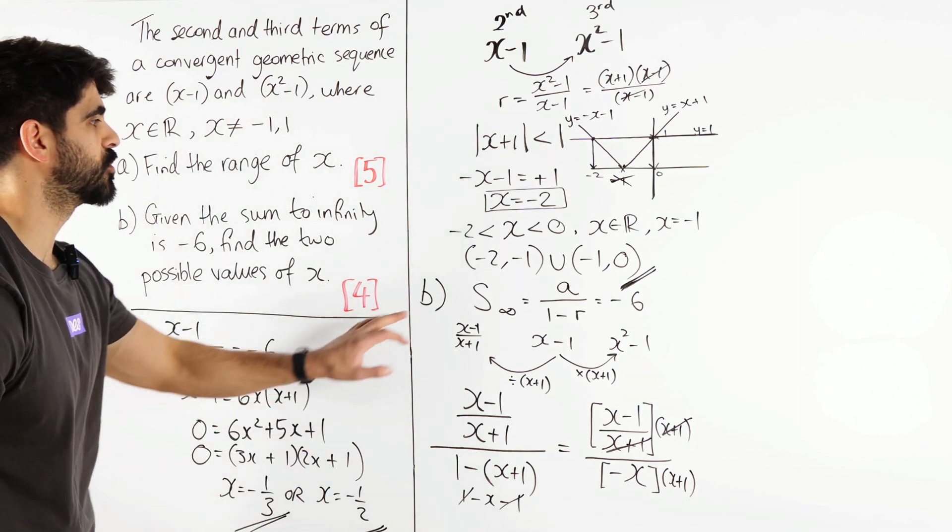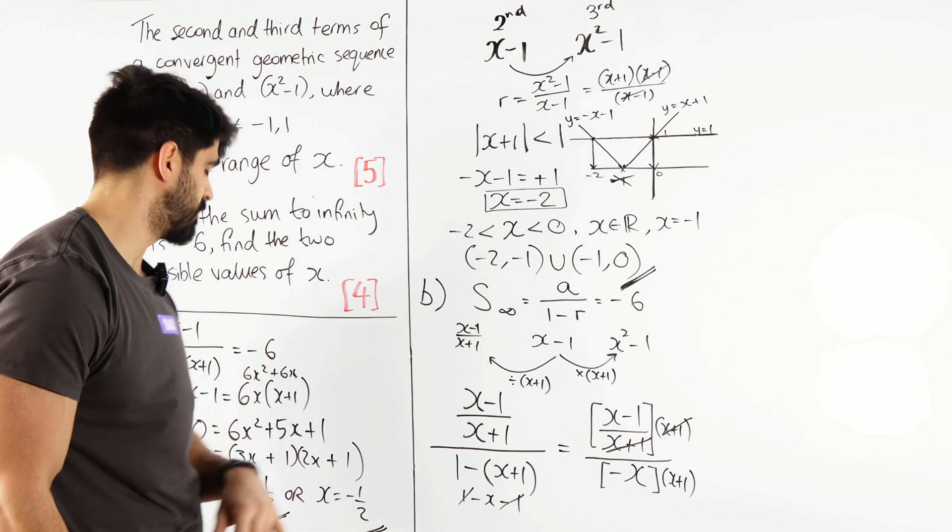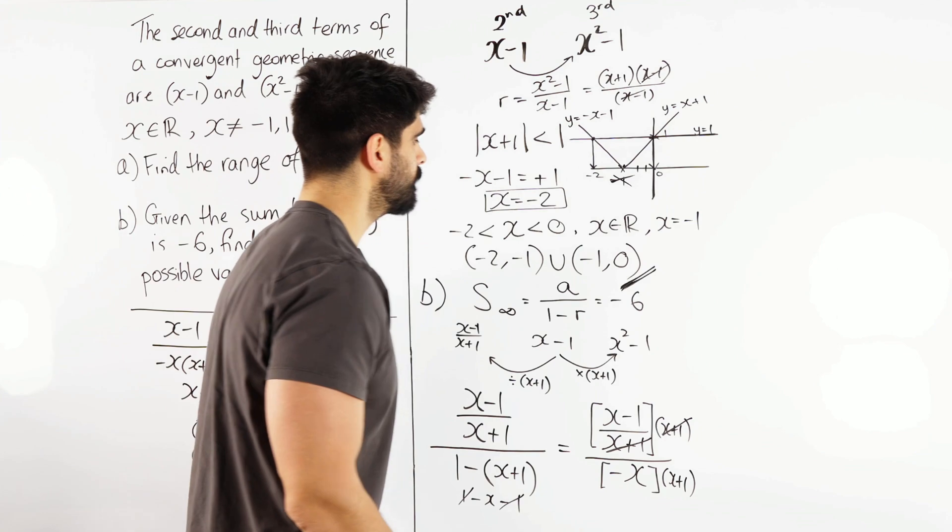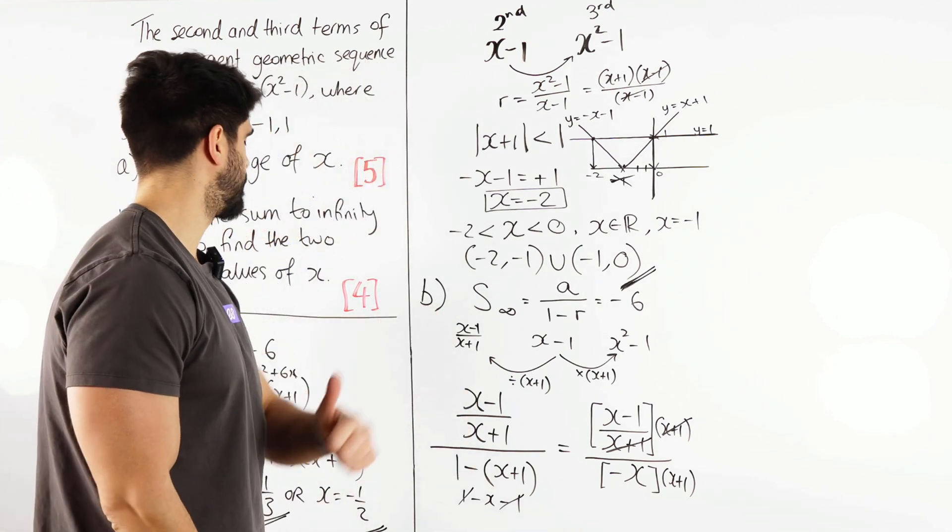And you can see both of those solutions lie within this range, isn't it? So x is minus 1 third and minus 1 half, they're both here. And it works. And that's very nice.